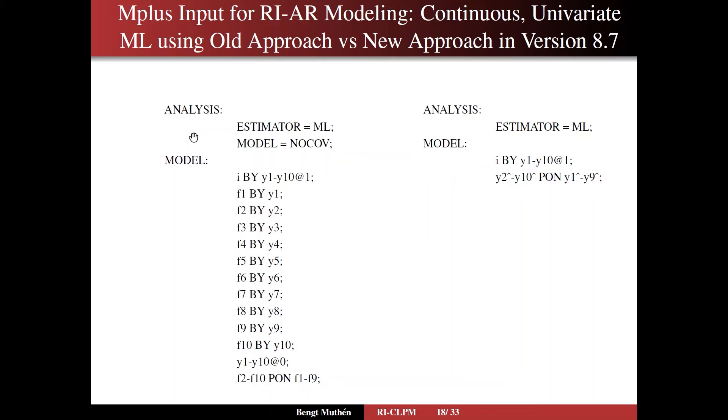So in the old approach, we specify all of these factors, all of these circles that we saw in the model figures. And we say that those residuals, residual variances are fixed at zero. So all of these factor loadings are fixed at one by default. And we define a random intercept factor I here.